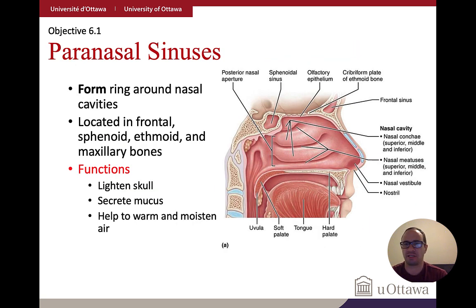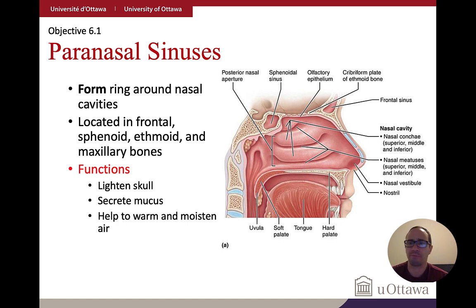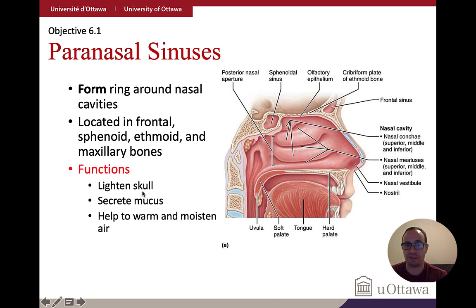Sinuses are spaces or cavities within the skull interconnected with the nasal cavity. They lighten the skull, help secrete mucus, and provide chambers where air can circulate to be moistened and warmed — all important as air travels down into the delicate respiratory system.